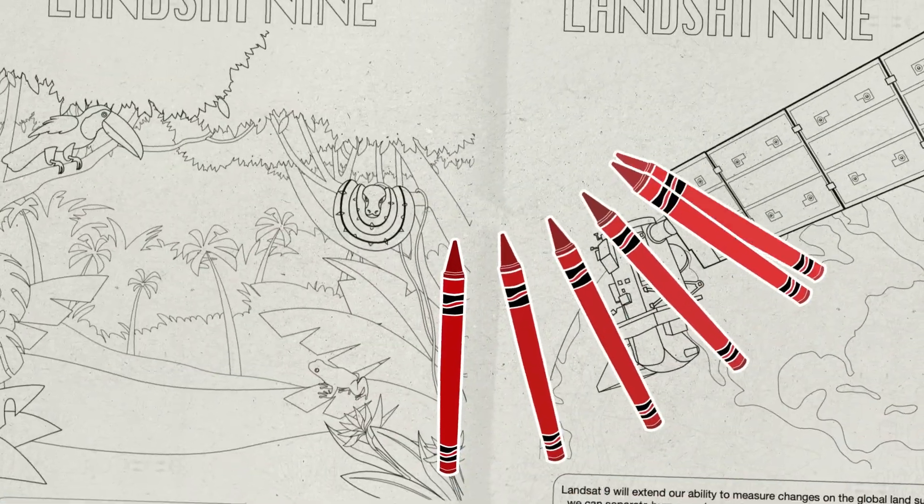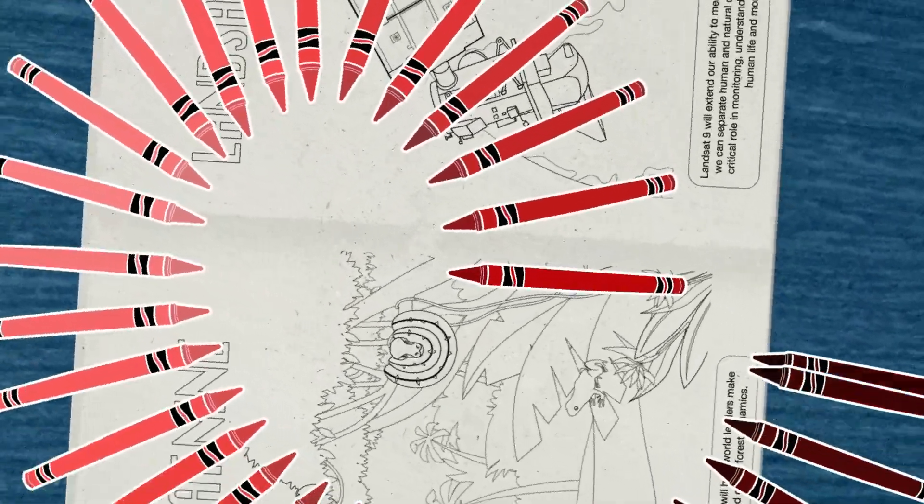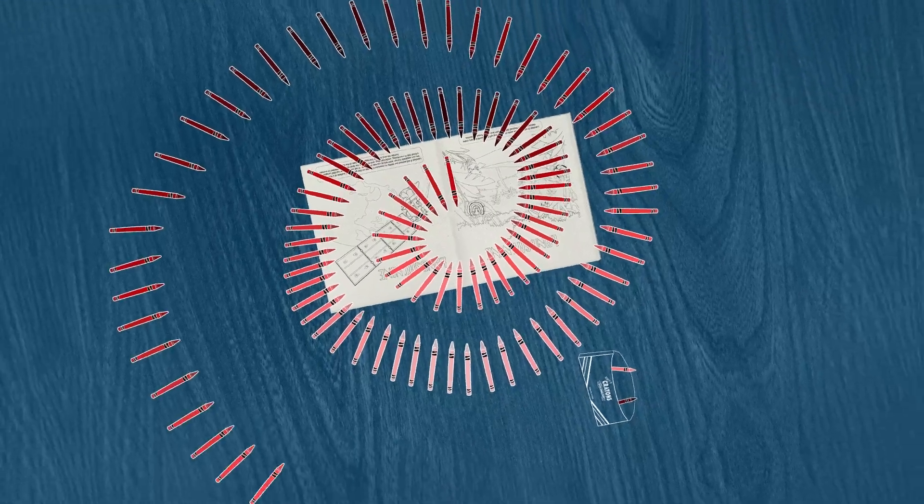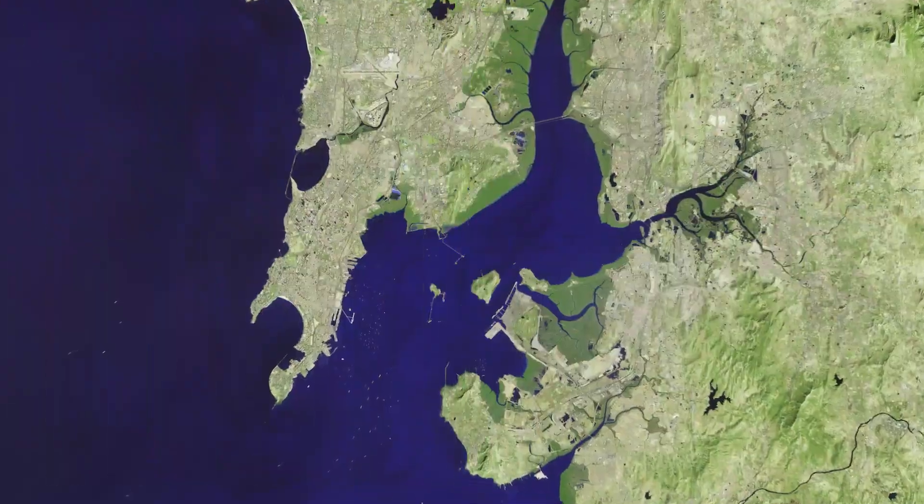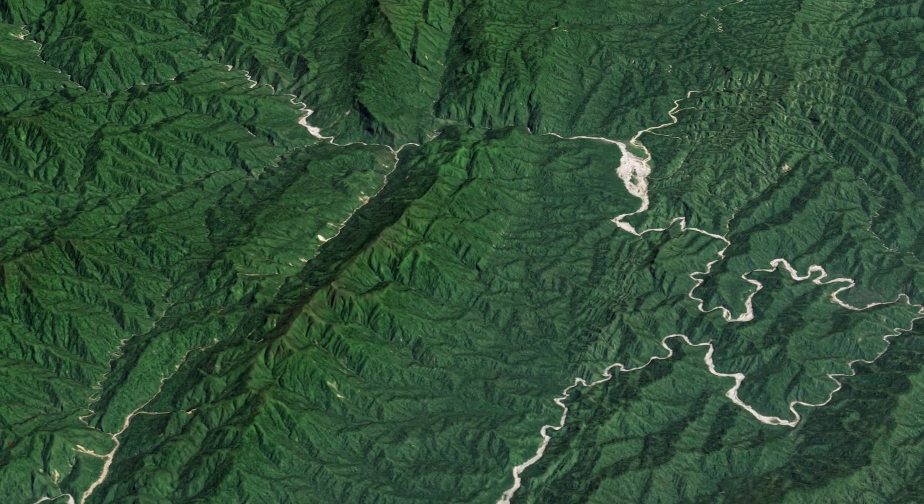Landsat 9, the newest satellite to join the Landsat fleet, sees 16,384 shades. That's four times the depth of color of the previous Landsat, meaning we'll be able to see more detail in darker spots like coastal waters and dense forests.